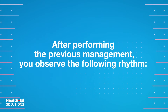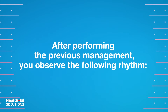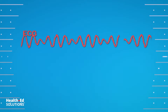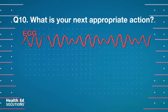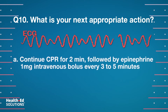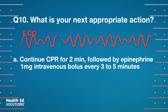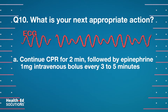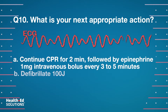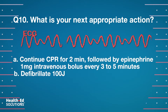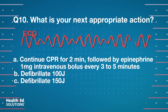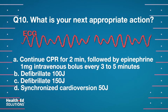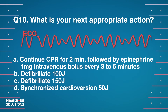After performing the previous management, you observe the following rhythm. Question 10: What is your next appropriate action? A. Continue CPR for 2 minutes, followed by epinephrine 1 mg intravenous bolus every 3 to 5 minutes. B. Defibrillate 100 joules. C. Defibrillate 150 joules. D. Synchronized cardioversion 50 joules.